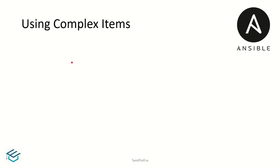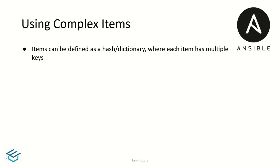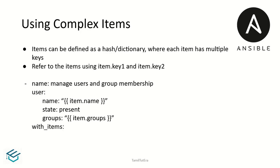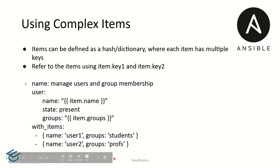Next, we will add complex items using key-value (dictionary) values. For example, if you want to use users and groups, you can use key-value pairs. If you want to access dictionary values with multiple keys, you refer to them as item.key1 and item.key2. For example, with with_items you define two keys: name with value 'user' and group with value 'students'. You access them as item.name and item.groups.